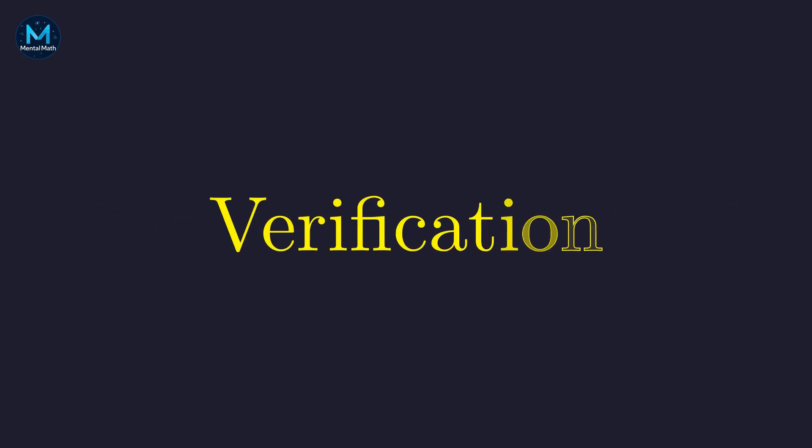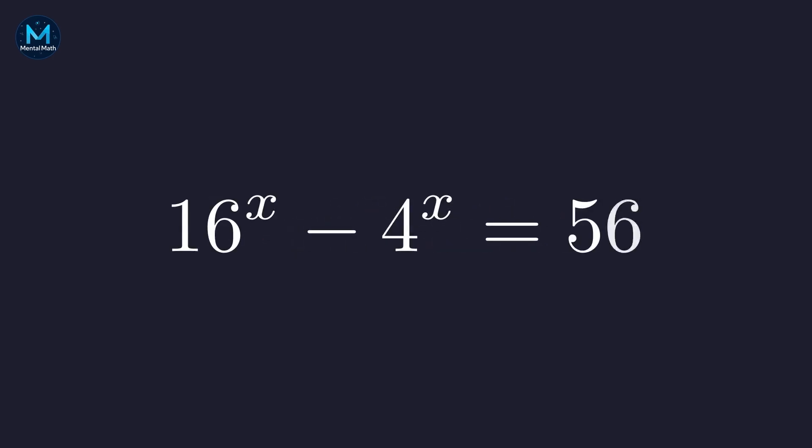So 4 to the x equals negative 7 has no real solution. That leaves us with just one solution. Let's verify it works in the original equation.